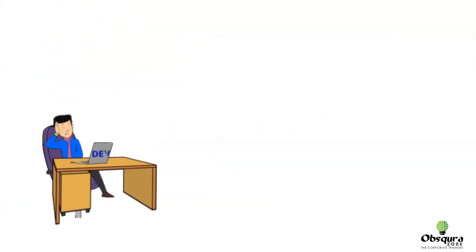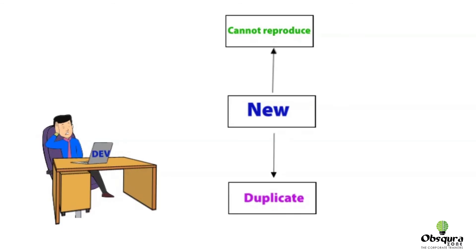At times, things can be even worse. Developer might not be able to reproduce the bug and status will be flagged to cannot reproduce. Even developer can put duplicate status for a bug which is already been reported.